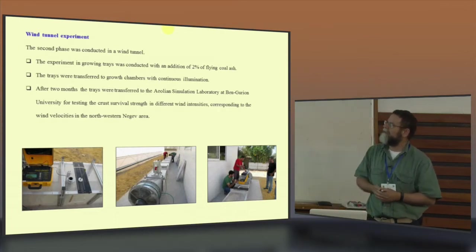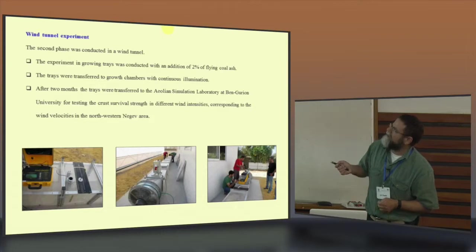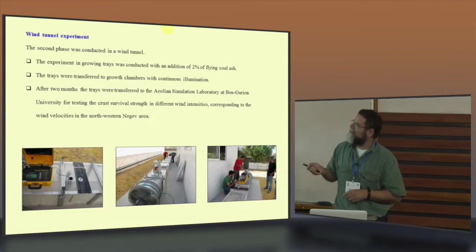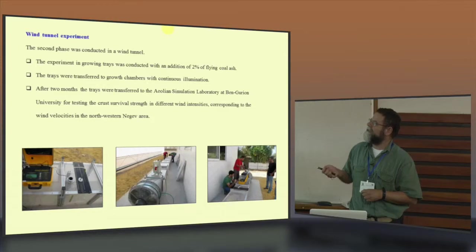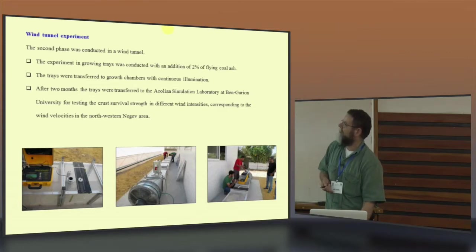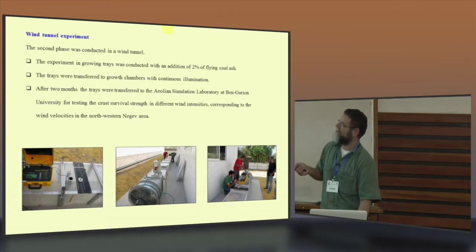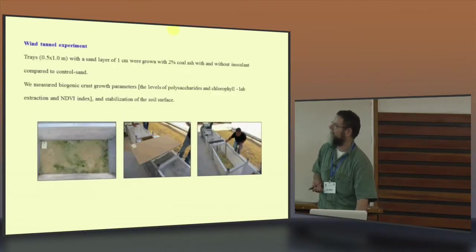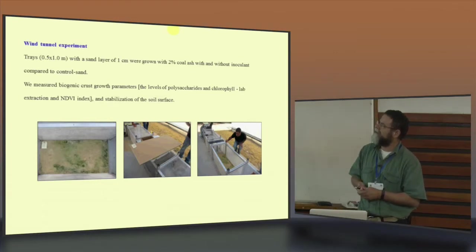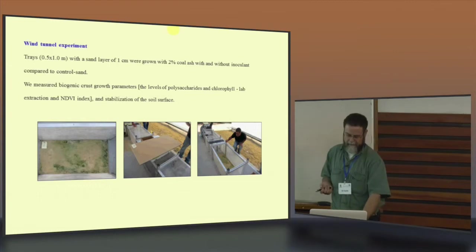The second experiment was wind tunnel experiment. The experiment in growing tray was conducted with addition of 2% coal ash. The tray was transferred to the growth chamber with continuous illumination. After two months, we moved them to the Aeolian Simulation Laboratory in Ben-Gurion University. The idea was to test the survival strength of the different wind intensity corresponding to the wind velocities in the northern area. We used a 0.5 to 1 meter tray, about 1 centimeter high depth, with 2% coal ash, and we measured the growth parameter that I mentioned before.